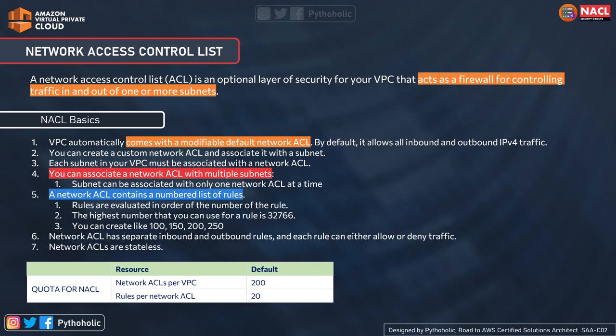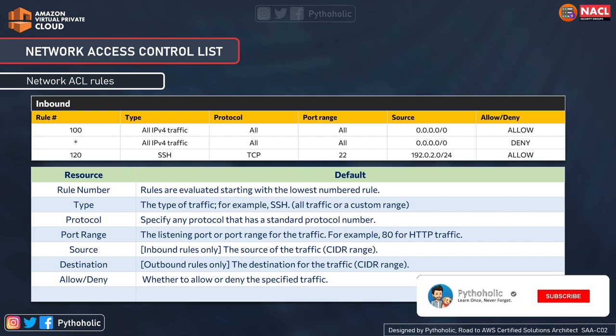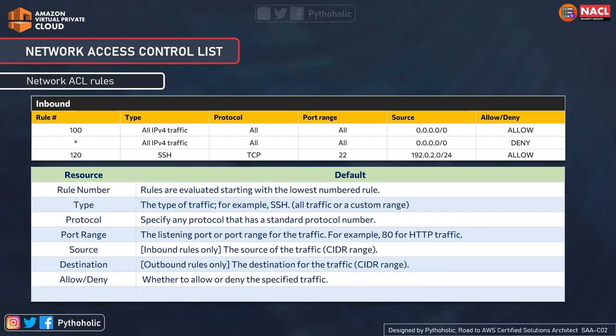A network ACL rule contains several components. Starting with rule number: rules are evaluated starting with the lowest number. For example, if rule 150 denies port 443 but rule 100 allows it, the network ACL would allow it because the lowest numbered rule takes precedence. The type is the type of traffic expected, such as SSH, HTTPS, HTTP, or ICMP. You can also specify all traffic or a custom range.